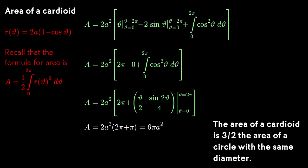And we get that the cardioid's area is 6πa². Since 4a is the diameter, we get, once we grind through the algebra, that the area of a cardioid is 3/2 the area of a circle with the same diameter.